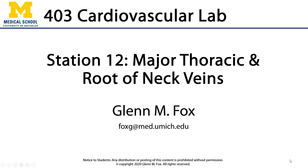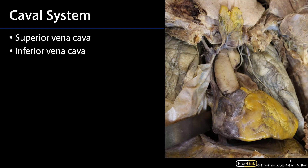Let's talk about the major thoracic veins in the root of the neck. The caval system references all of the blood flowing into either the inferior or the superior vena cavae — the blood that's being drained from systemic circulation and being returned to the right atrium of the heart.